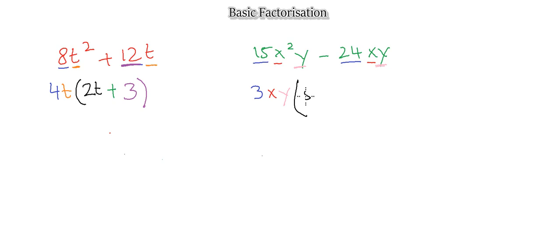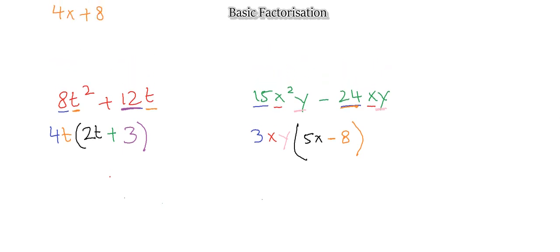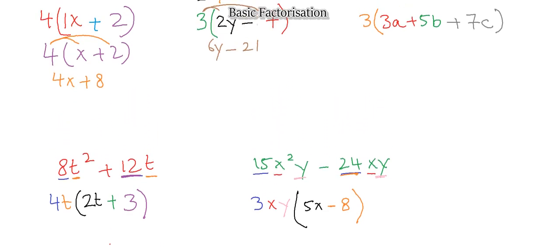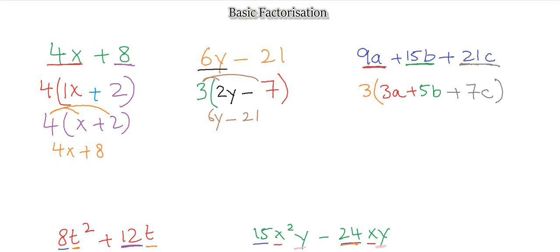Inside the bracket: 3 times 5x gives 15x², and 3 times 8 gives 24 — so the result is 3xy(5x − 8). You can expand it to check. That's basically what factorization is: finding the common factors and placing them outside the bracket.